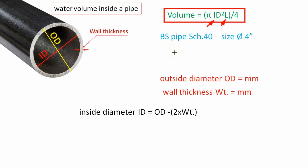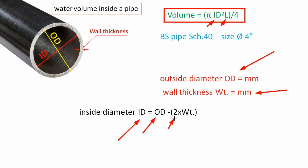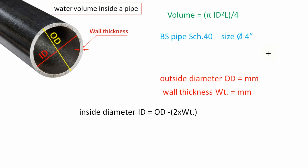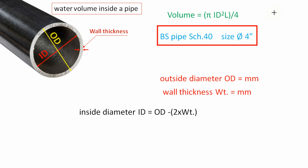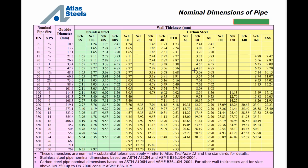From the pipe properties table, we can select the pipe outside diameter and pipe wall thickness. To calculate the inside diameter, we use this formula: pipe inside diameter equal to pipe outside diameter minus 2 times pipe wall thickness. For our sample calculation, let us assume we have a black steel pipe, schedule 40, diameter 4 inch.